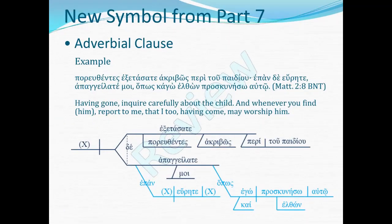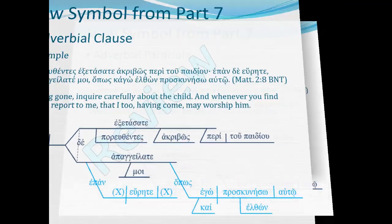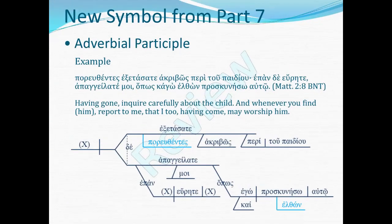In part seven, we learned about adverbial clauses. They supply modifying information about some other verb in the sentence. Here you see two adverbial clauses introduced by conjunctions, modifying the imperative appongelate. We also learned about the adverbial participle. That same sentence has two adverbial participles, each shown in the light blue color. Notice the right angle modifier shelf that's used for the adverbial participle — that will figure into our discussion of this video's new information.